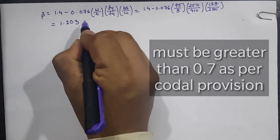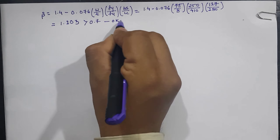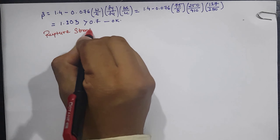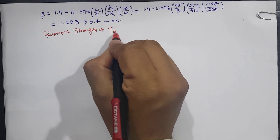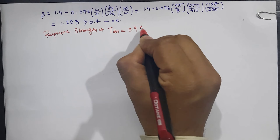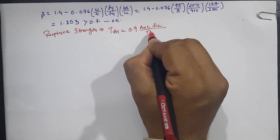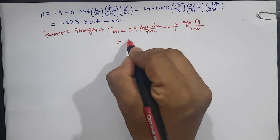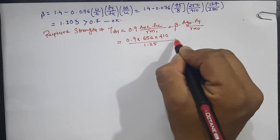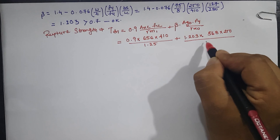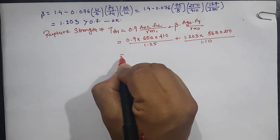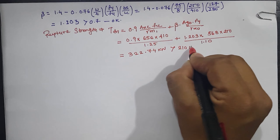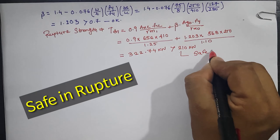The result is β = 1.203, which is greater than 0.7, so it is acceptable. The rupture strength equation is: Tdn = 0.9 × Anc × fu / γm1 + β × Ago × fy / γm0, which gives Tdn = 322.74 kN. This is greater than 210 kN as the design load, so the section is safe in rupture.